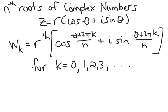You start by plugging in k = 0, then k = 1, then k = 2, and so on. How many values of k do you plug in? That depends on the root. If you're taking a cube root, you plug in 0, 1, and 2. If you're taking a fifth root, you plug in 0, 1, 2, 3, and 4. This can get lengthy for large roots, so we'll restrict ourselves to just two or three roots.